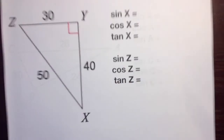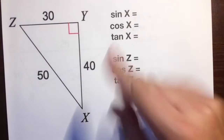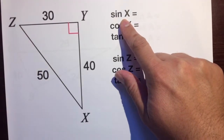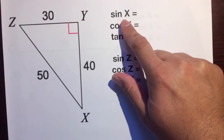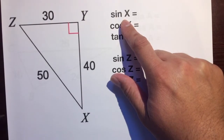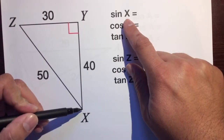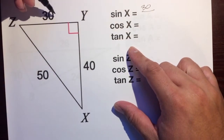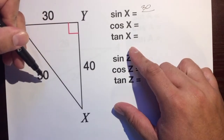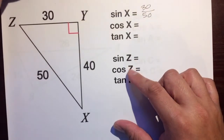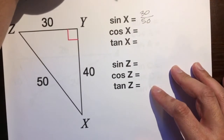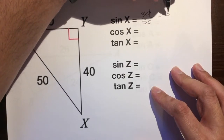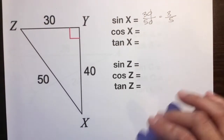So now let's get to these ratios. The sine of X — remember, sine is the opposite over the hypotenuse, the SOH. So what's the opposite of angle X? It's 30, over the hypotenuse which is 50. And if we simplify that — with the tens places you can cancel out the zeros — the sine of X would just be 3 over 5.